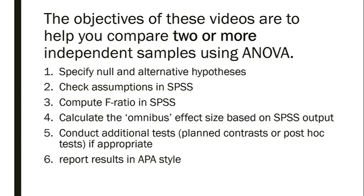To do that we'll specify null and alternative hypotheses. We'll check assumptions using the Explore function and the Compare Means function in SPSS. We'll compute an F-ratio using the Compare Means function in SPSS, and we will also calculate an omnibus effect size. We're going to calculate partial eta squared, but there are a couple of different alternatives — different ways of expressing effect size in both the pink book and in Field — that you can compute based on SPSS output. We're also going to conduct some additional tests: those planned contrasts or post hoc tests, and we'll report the results of example one in APA style.